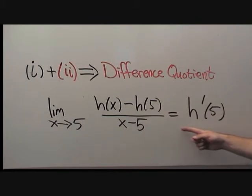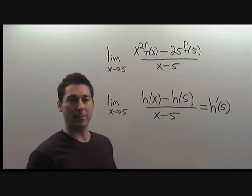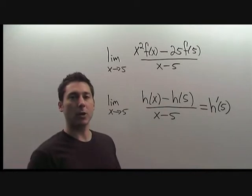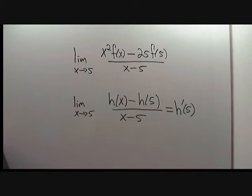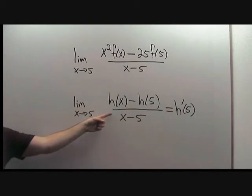This limit evaluates to h prime of 5. Our plan is to now rewrite the expression inside the limit as the difference quotient for some function h. The question is, what should that function be?